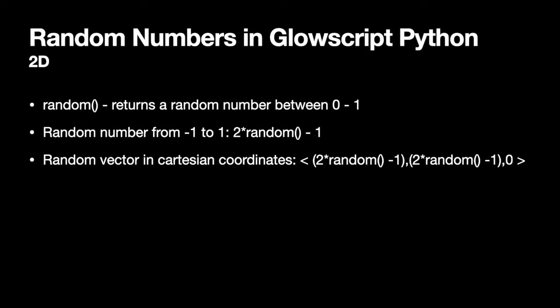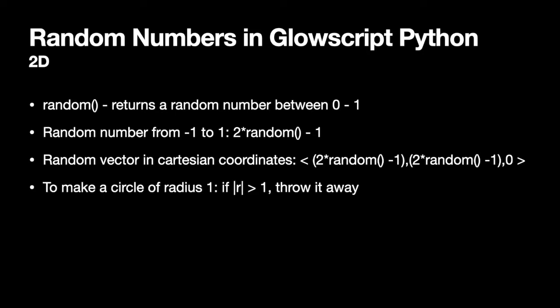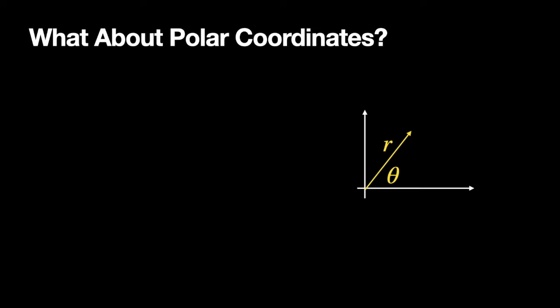If I want to make a random vector in Cartesian coordinates — keeping it in two dimensions — it's two times random minus one for the x coordinate, another two times random minus one for the y coordinate, and zero for the z. To make a circle, you make a random vector and measure the magnitude: x squared plus y squared. If that magnitude is greater than one, don't plot it — do it again. That will leave you only with points inside a circle.